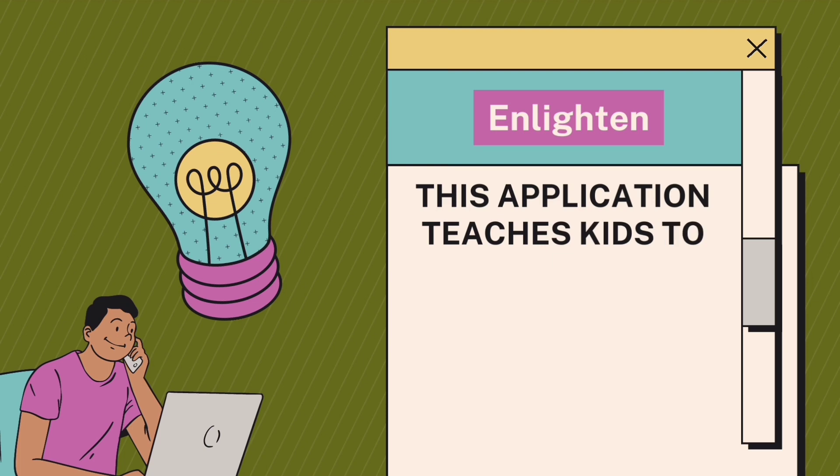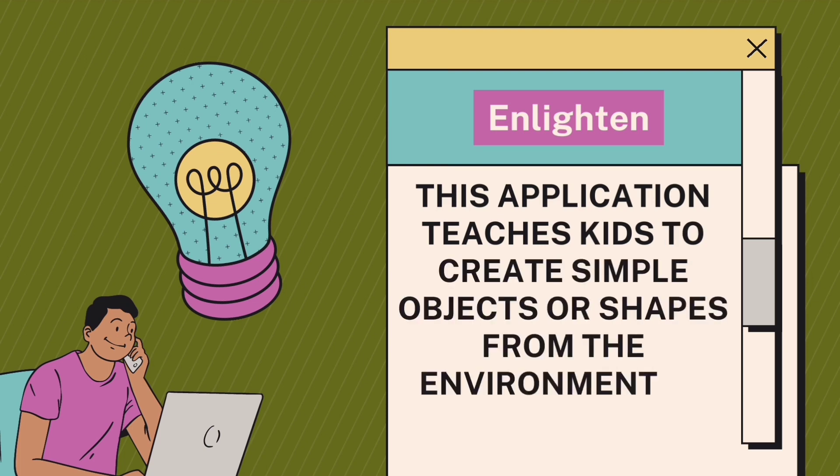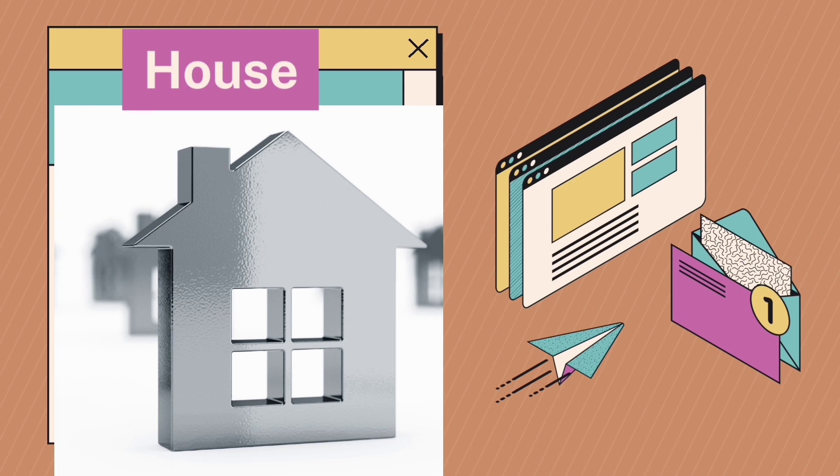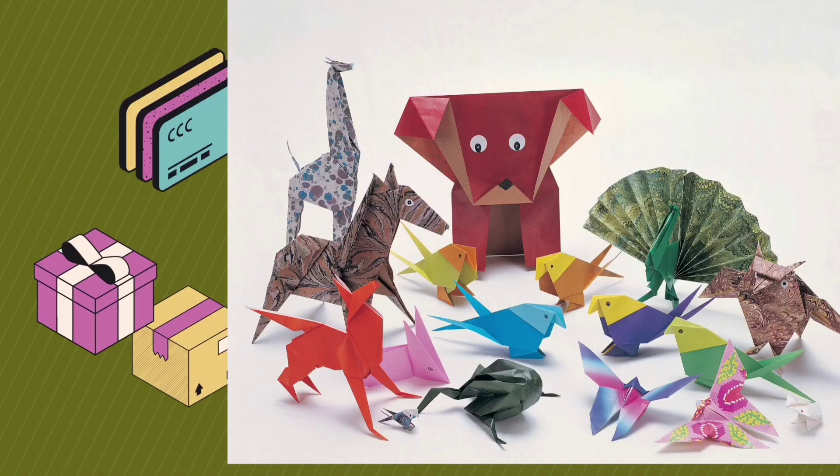This application teaches kids to create simple objects or shapes from the environment to make up any sensible image, sensible image like house. You can see this house has the triangle shape, the square shape, and even the rectangle shape. We can also use these shapes to make animals.